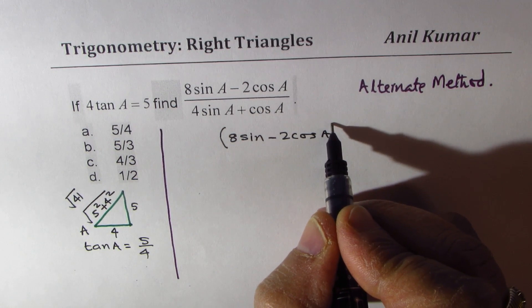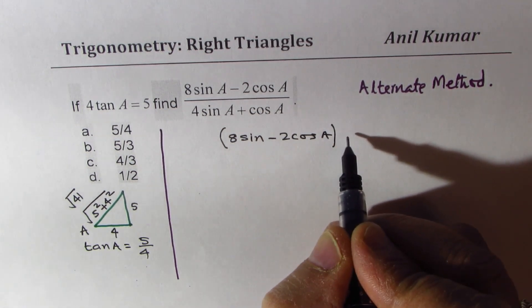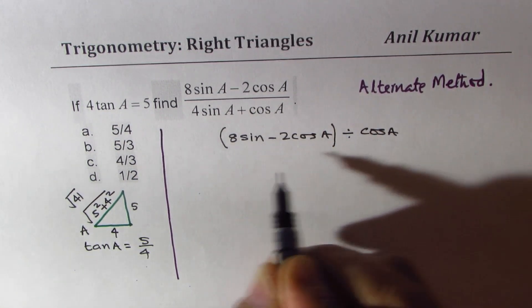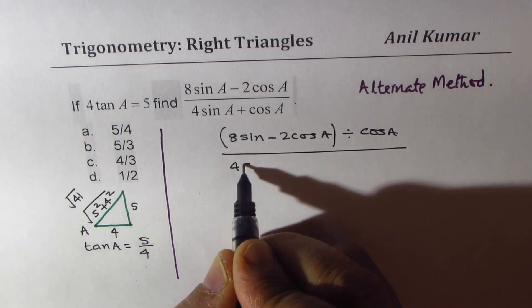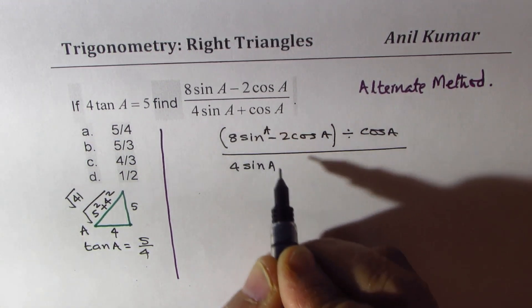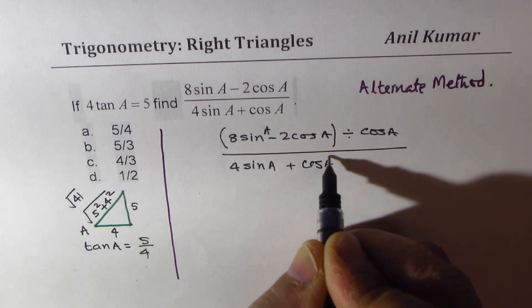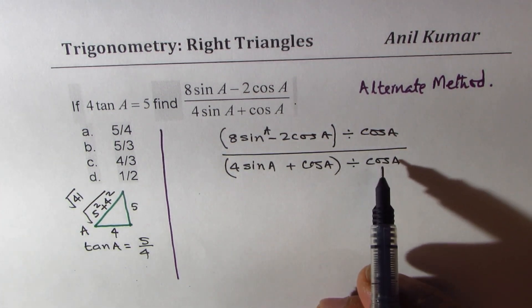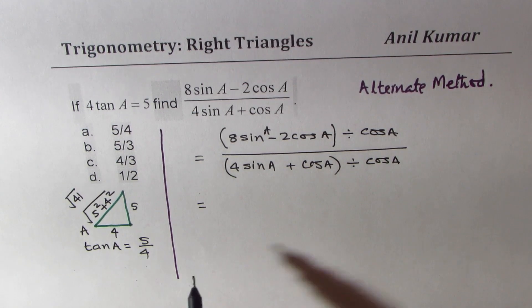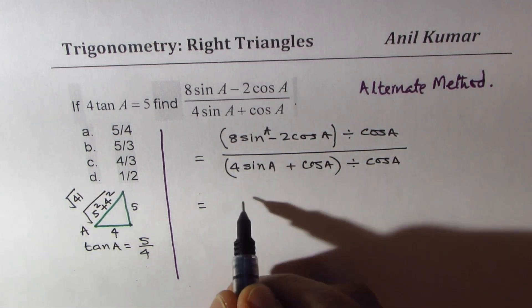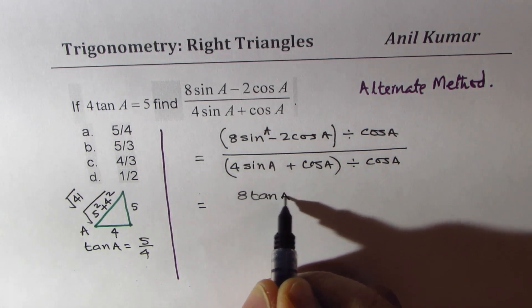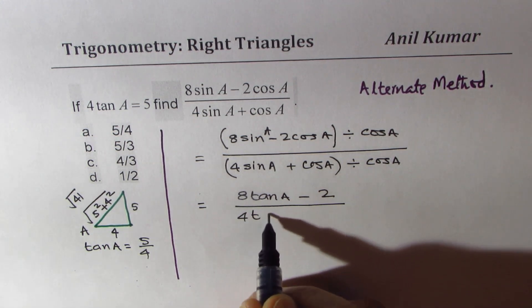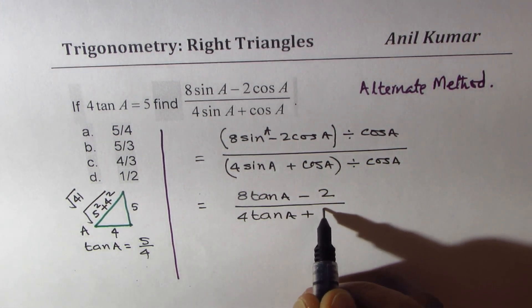Now if I divide all this by cos A, then what do I get? That is to say, if I divide this by cos A, similarly in the denominator, which is (4 sin A + cos A), and if I divide that also by cos A, I could do that. Same thing on both numerator and denominator. So we get sin A divided by cos A is tan A, so I get 8 tan A minus 2. And here we get 4 tan A plus 1.